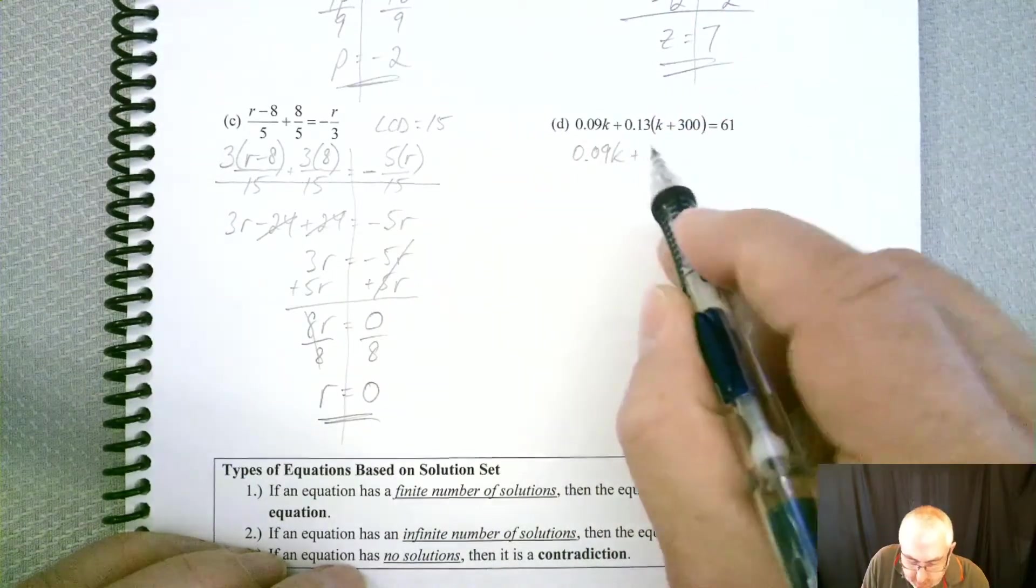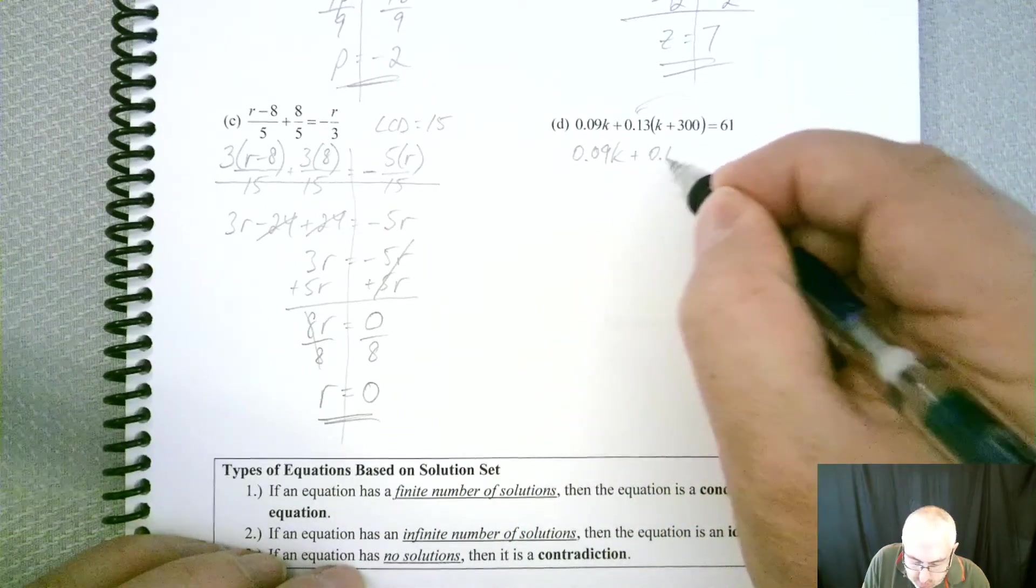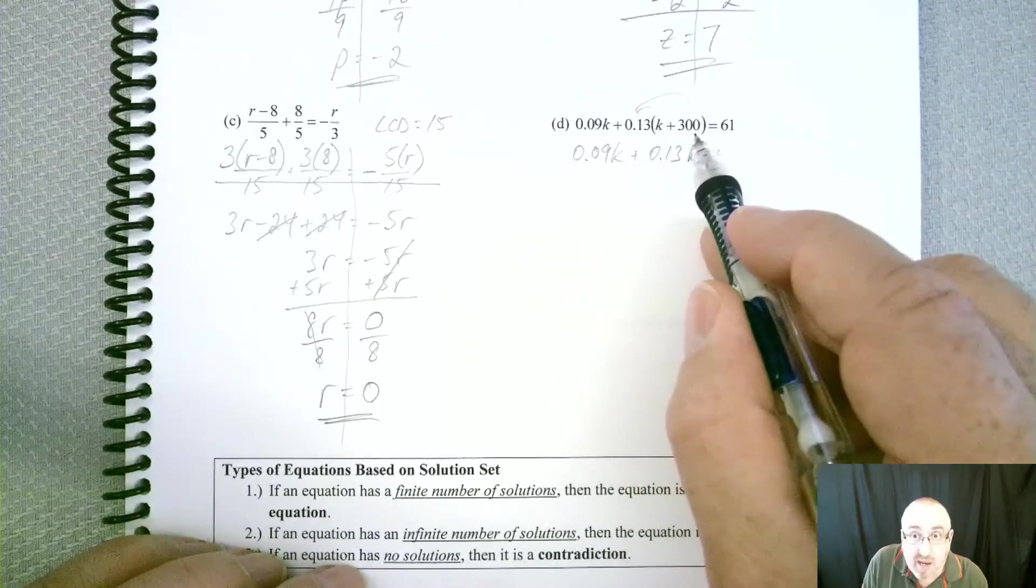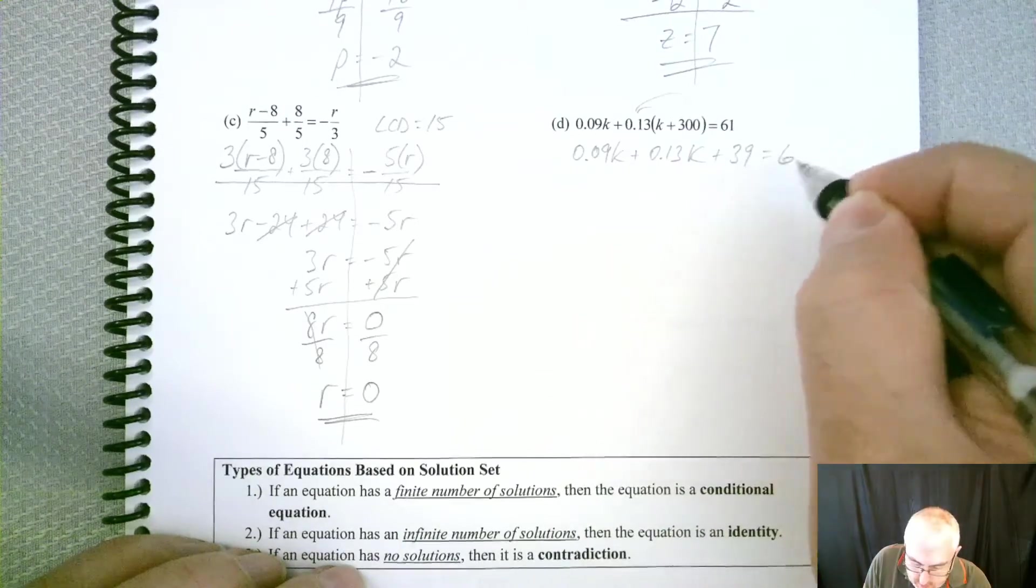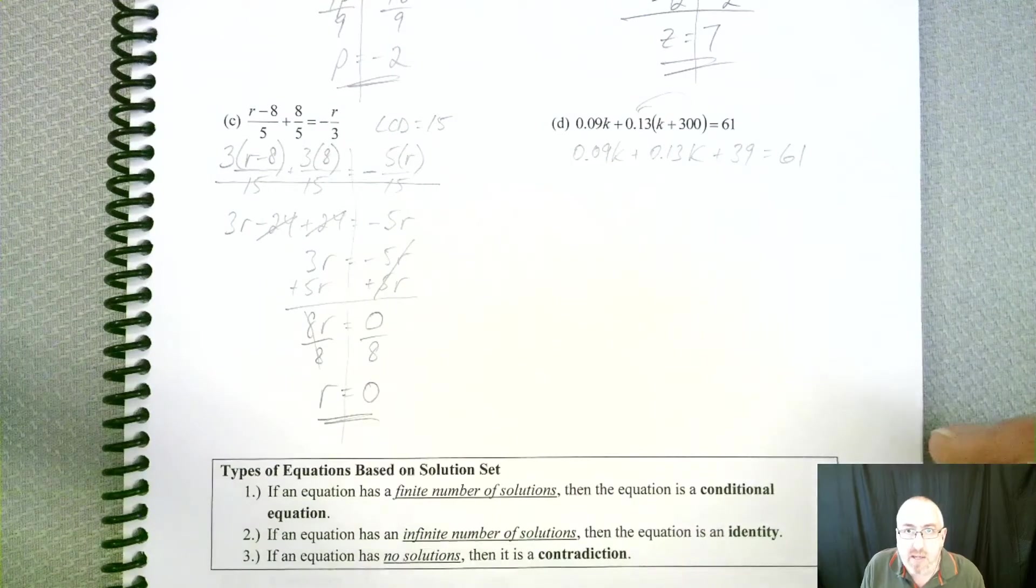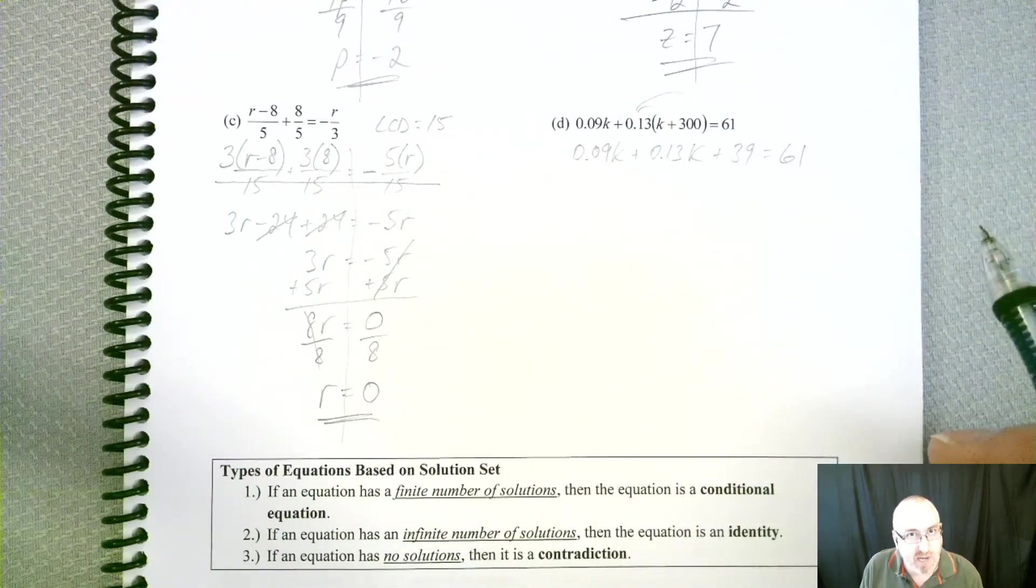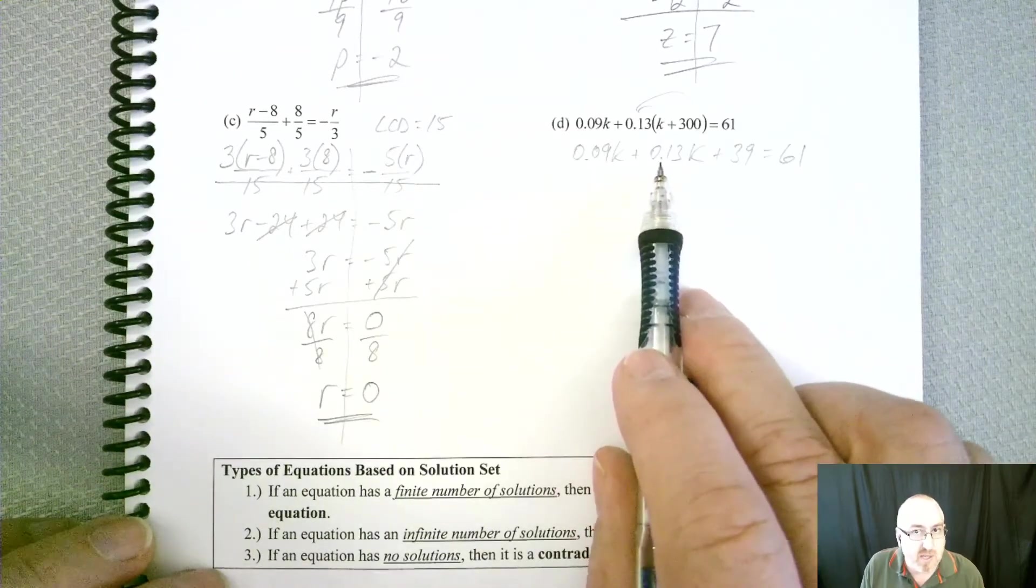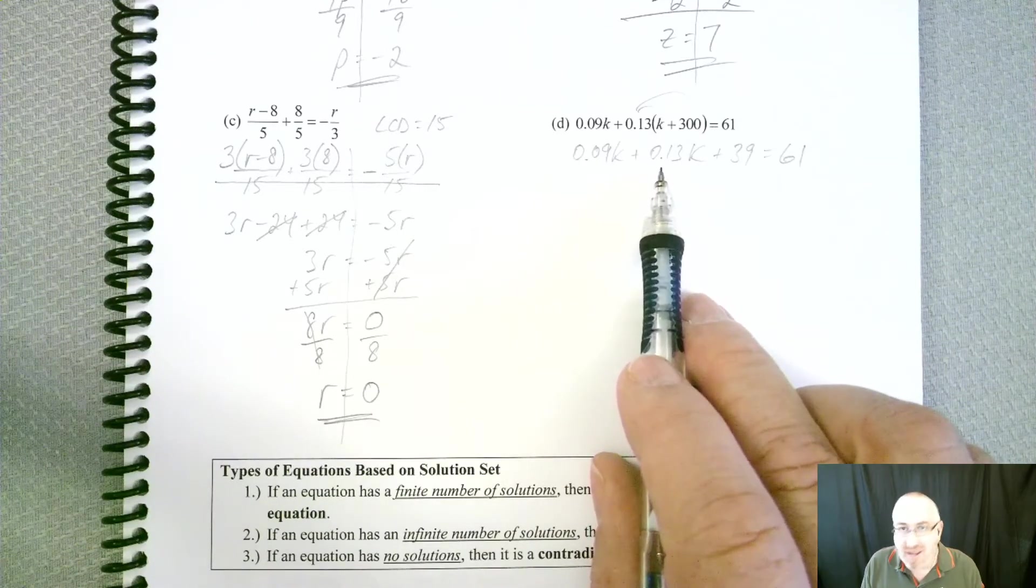So if we multiply that in by distributing, we should get 0.13k plus 0.13 times 300 is 39. So not anything too drastic so far, but some people are sloppy with decimal points. You know, they don't like to put the zeros in front, so those decimal points sometimes just get lost accidentally, but they get lost.